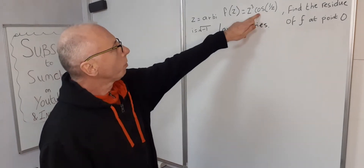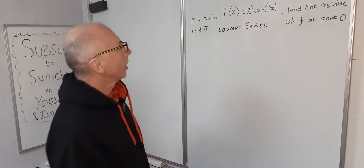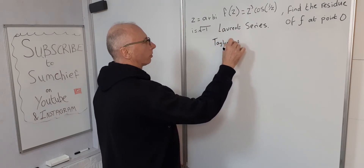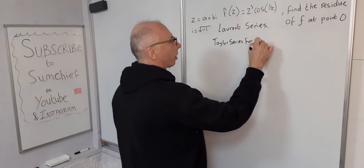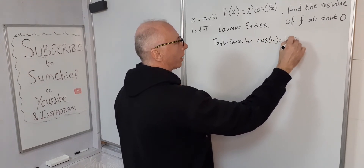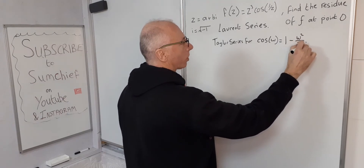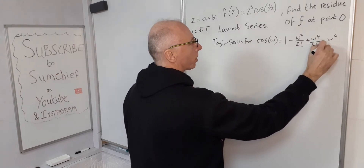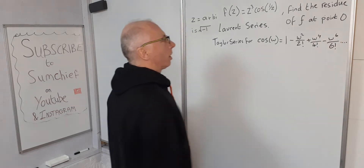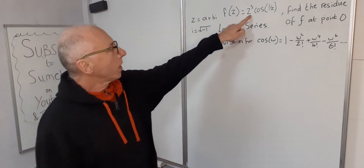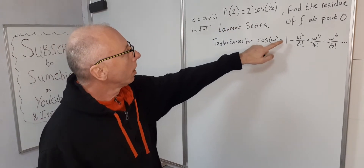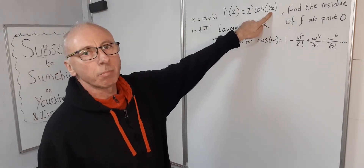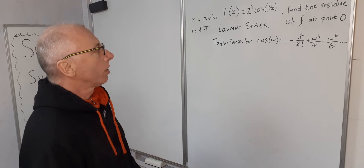First, we recall the Taylor series for cosine: cosine(w) = 1 − w²/2! + w⁴/4! − w⁶/6! + ... Since we have z cubed multiplying cosine(1/z), we can substitute w = 1/z into this Taylor series and then multiply through by z cubed to get our Laurent series.